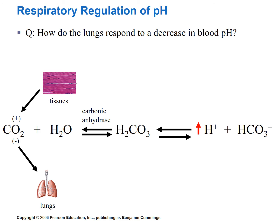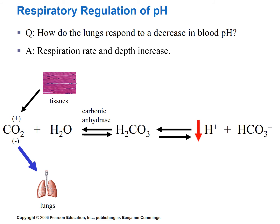What about the contrary situation — a decrease in blood pH? Recall that a decrease in blood pH means an increase in hydrogen ion concentration. The lungs would respond by increasing respiration rate and depth. More frequent and deeper breaths — a higher tidal volume — will decrease carbon dioxide levels, shifting the equation from right to left, resulting in a decrease in hydrogen ion concentration and restoring blood pH to its normal range.